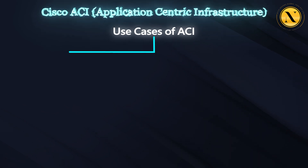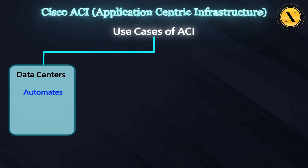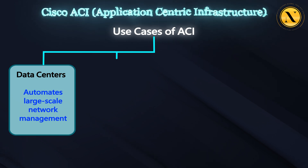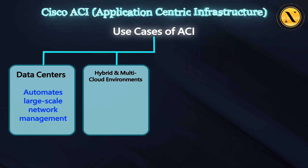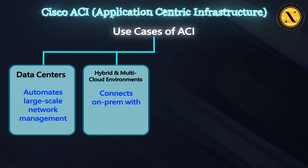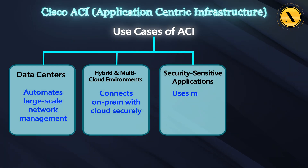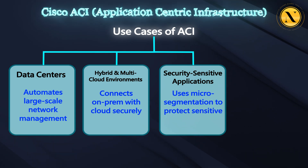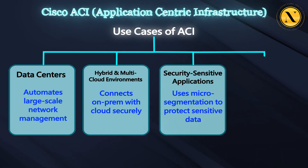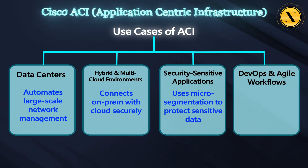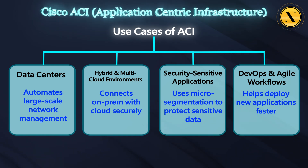Use cases of ACI. In data centers, it automates large-scale network management. Hybrid and multi-cloud environments: connects on-prem with cloud securely. Security-sensitive applications: uses micro-segmentation to protect sensitive data. DevOps and agile workflows: helps deploy new applications faster.